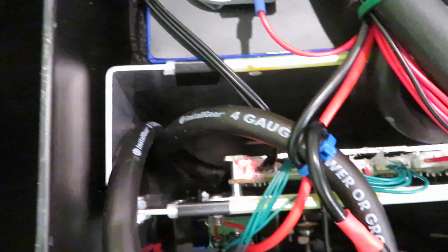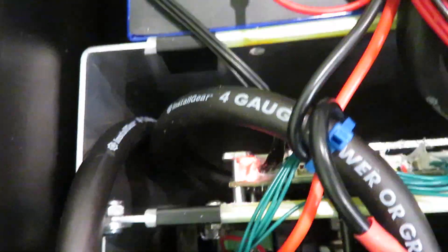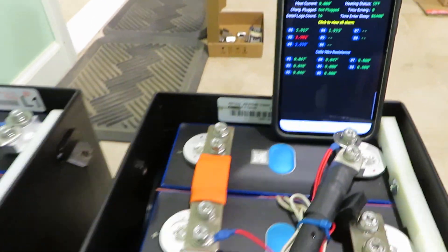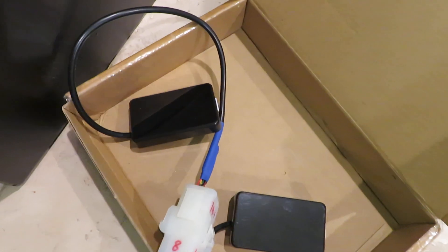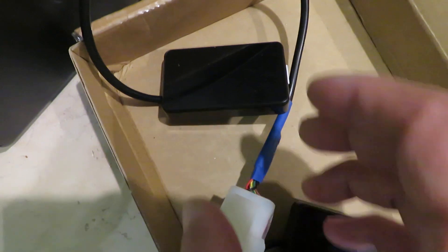This one is not blinking. I believe it is because we are connected to Bluetooth so it's not blinking. And the displays are also off because there's no activity, no charging or discharging, so the display turned itself off.